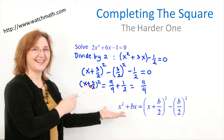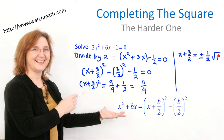So we have x plus 3/2 squared is equal to 11/4. Therefore, x plus 3/2 is equal to plus or minus the square root of 11/4, which is 1/2 times the square root of 11. Therefore, x is equal to negative 3/2 plus or minus 1/2 times the square root of 11.